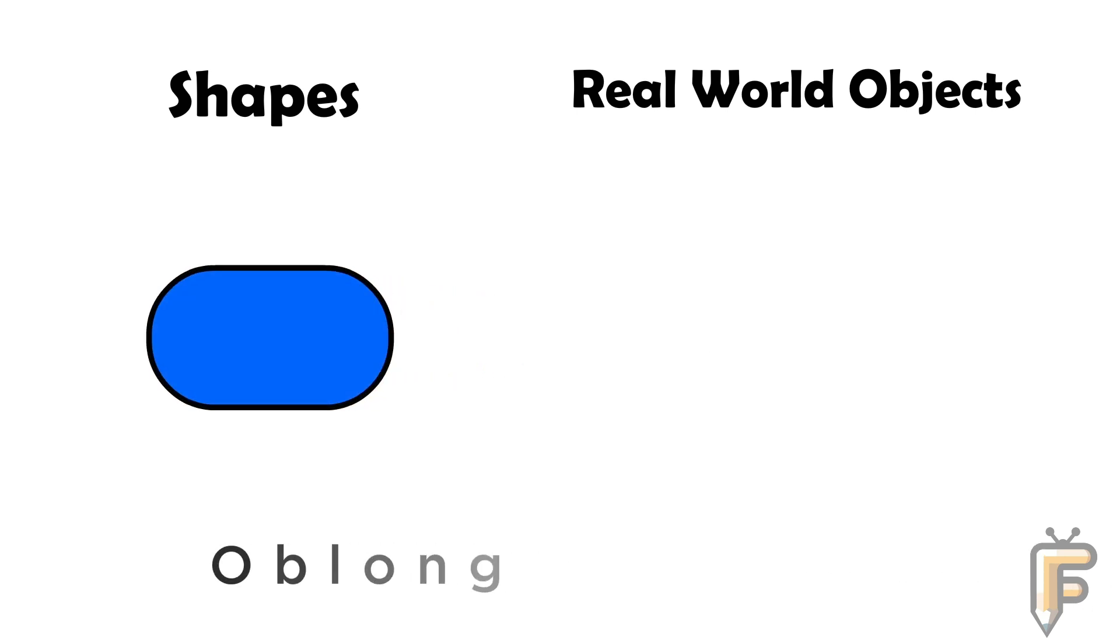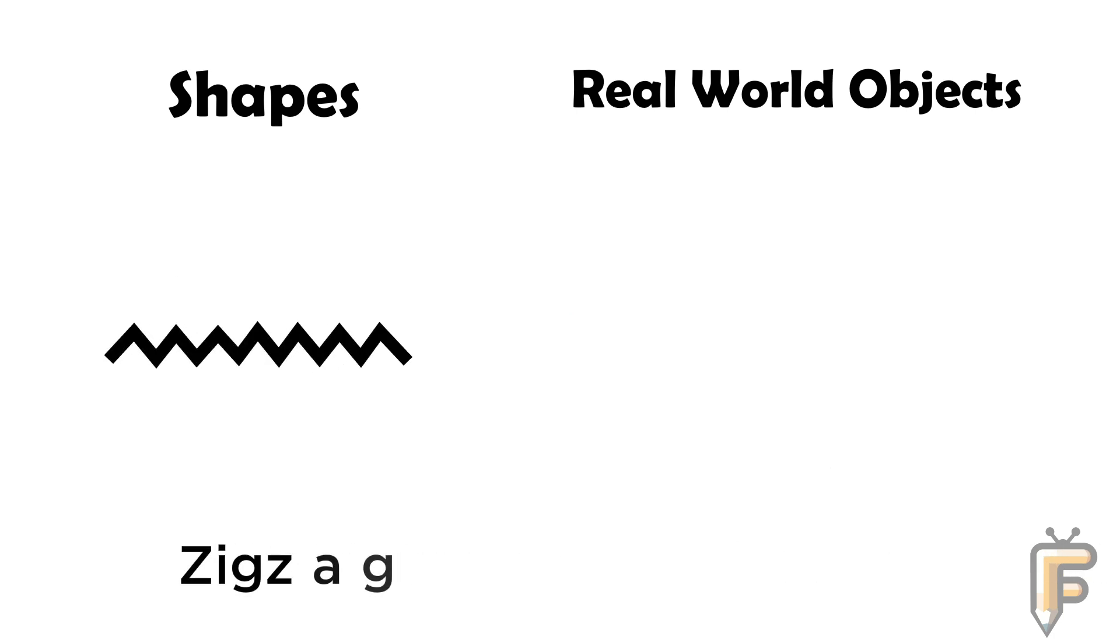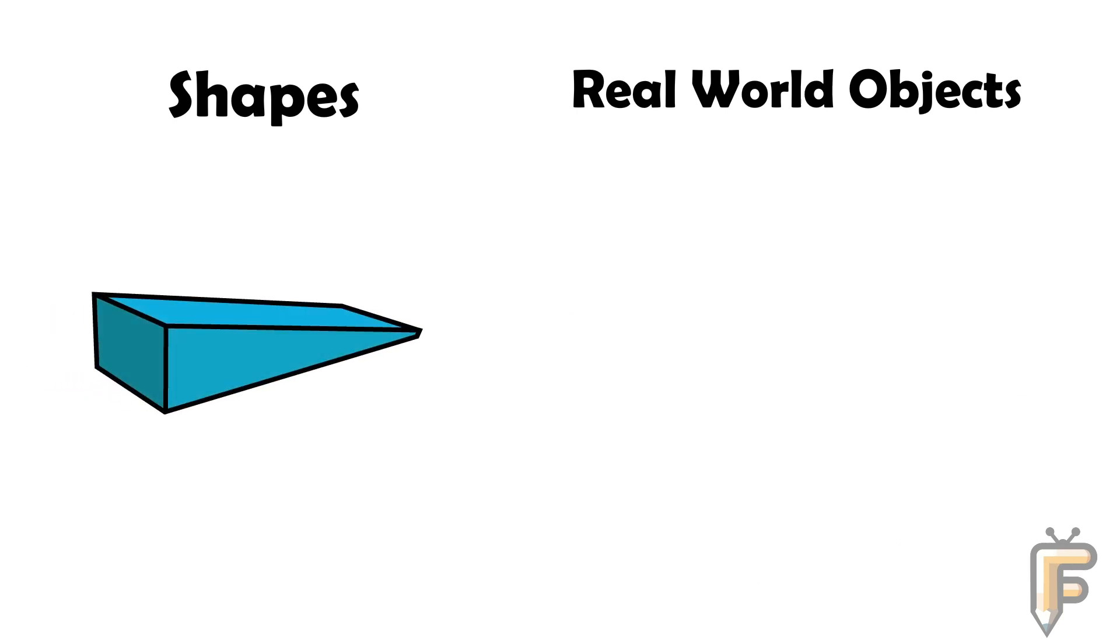Oblong: TV remote is oblong shape. Zigzag: saw blade is zigzag shape. Wedge: cheese wedge.